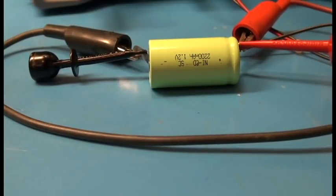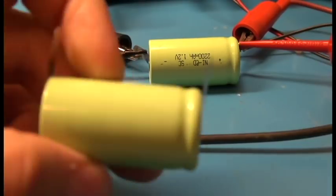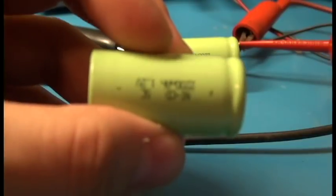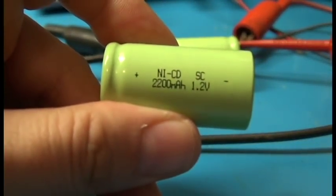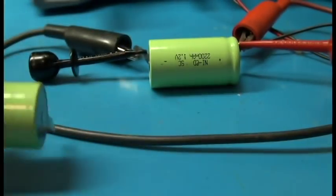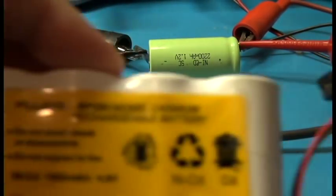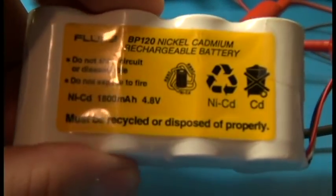Alright, so today on the bench I'm going to be testing some NiCd rechargeable batteries. These batteries I used in a previous project. They are generic NiCd 1.2 volt, 2200 milliamp hours, and I used four of these to repair a battery pack that goes in my Fluke Scope Meter.